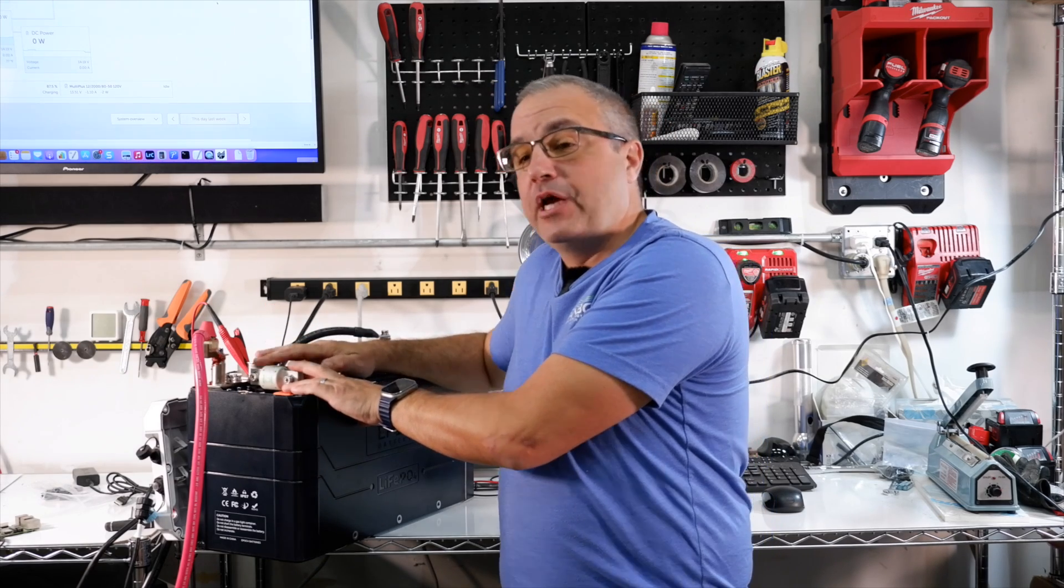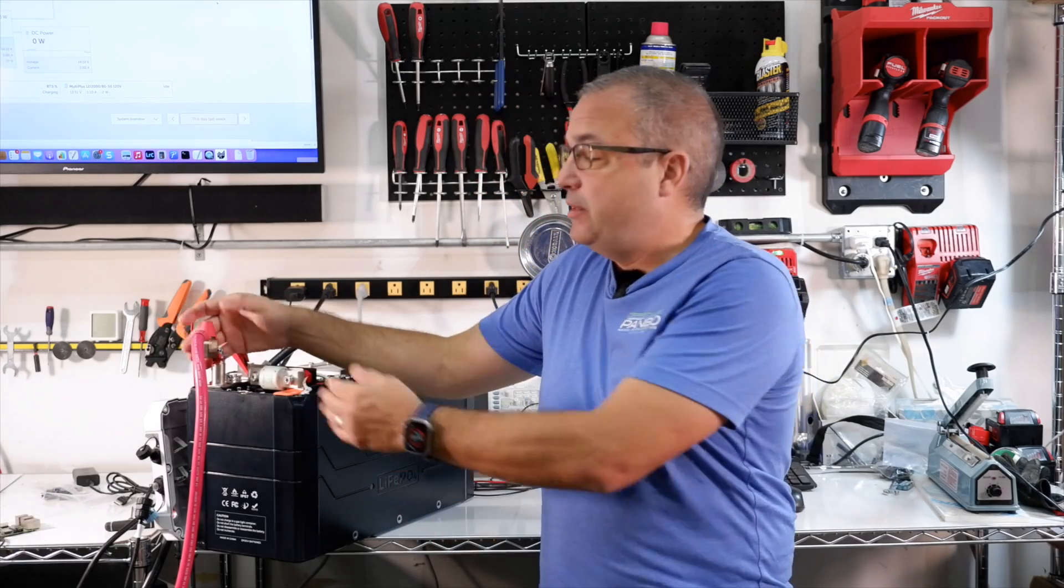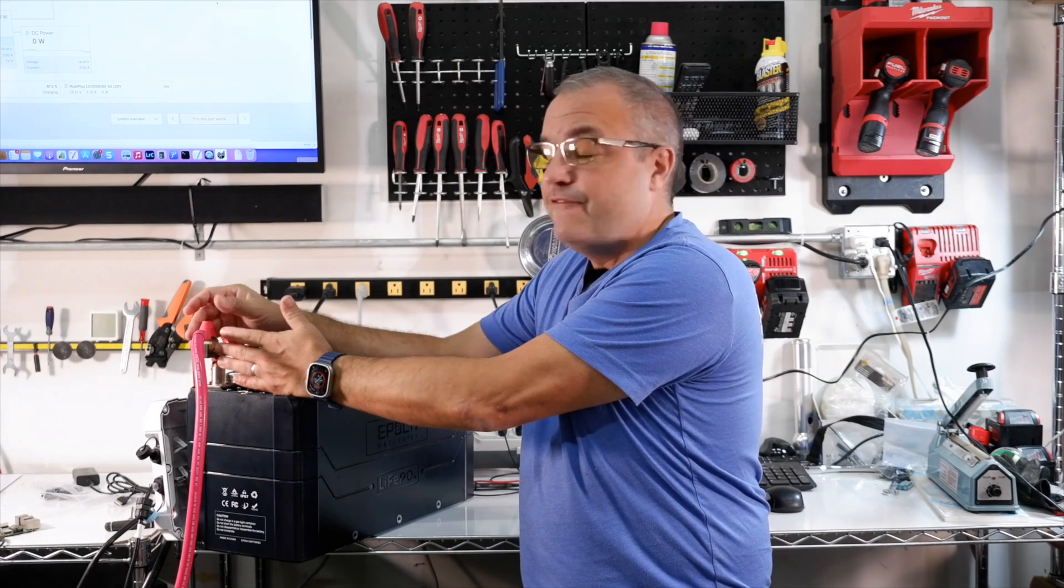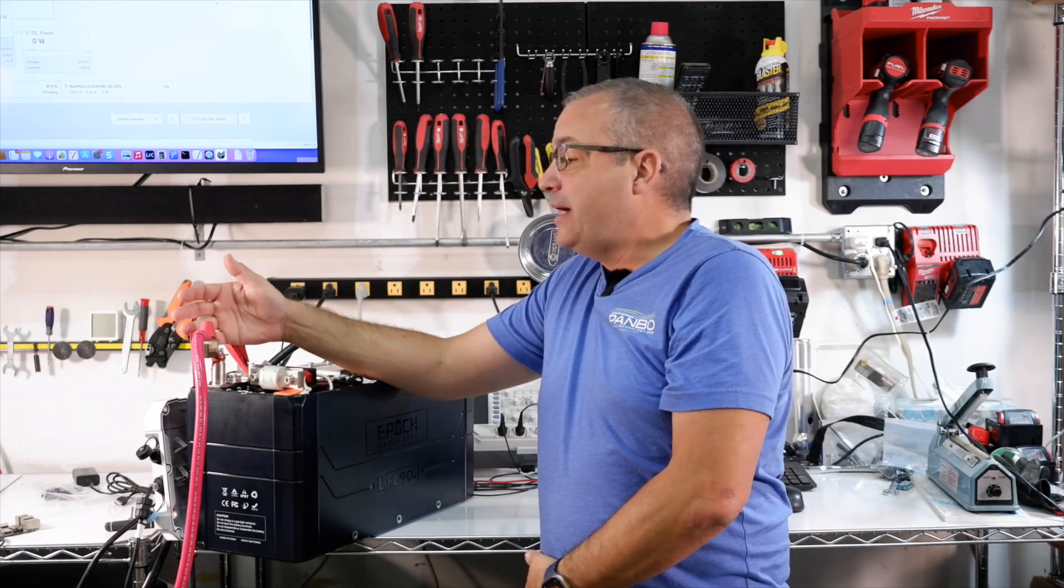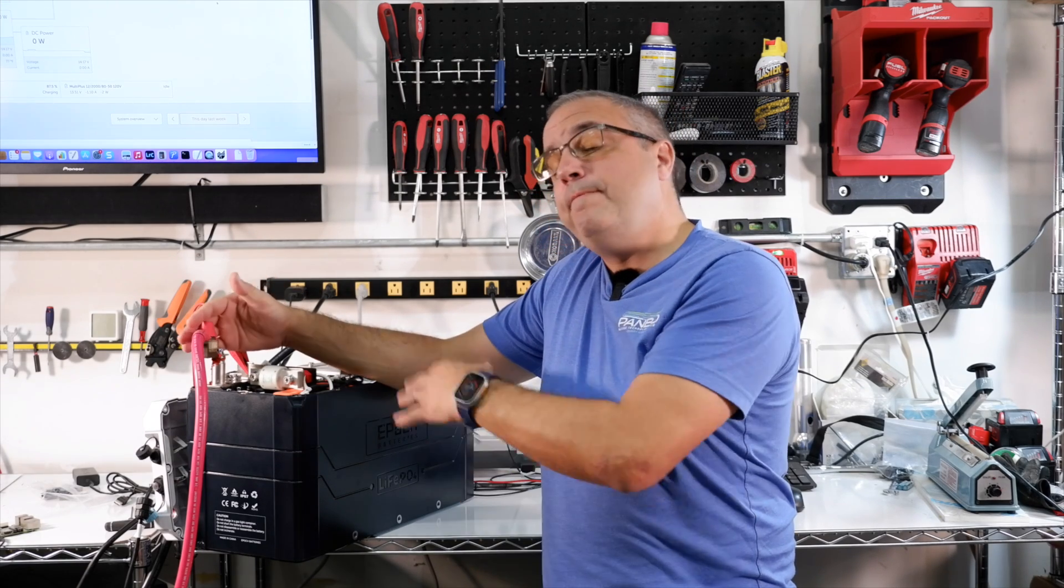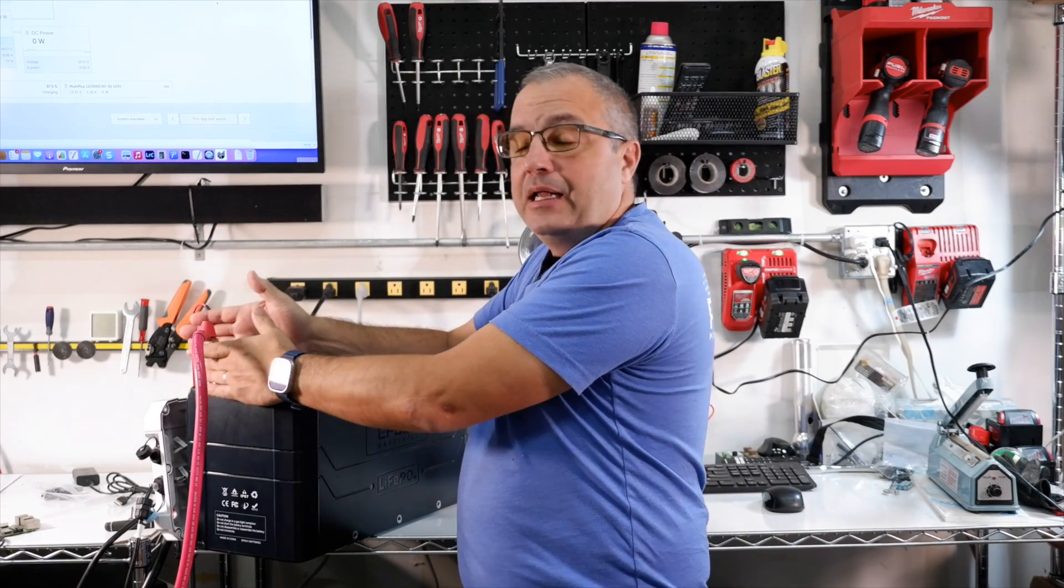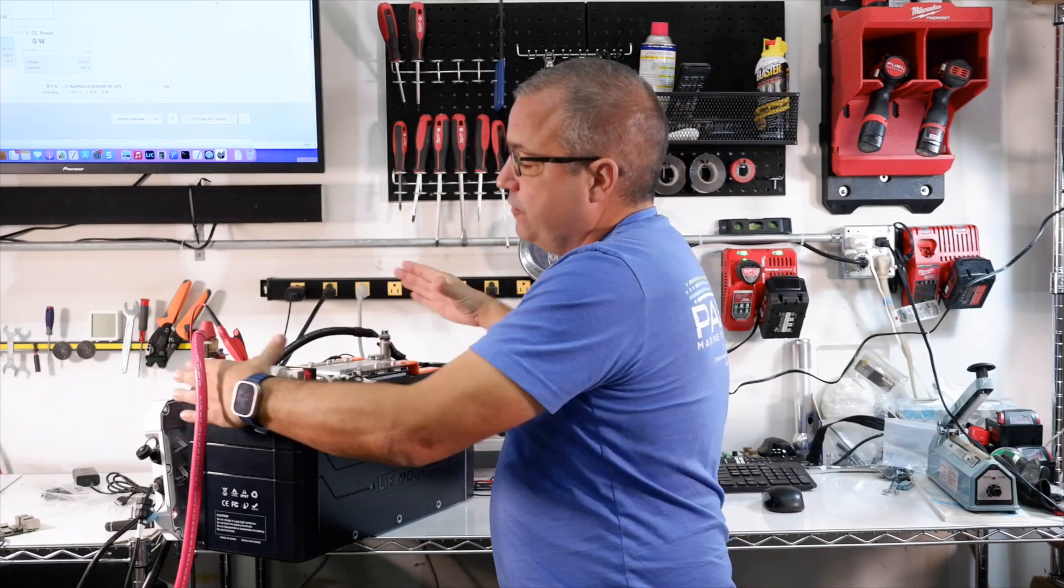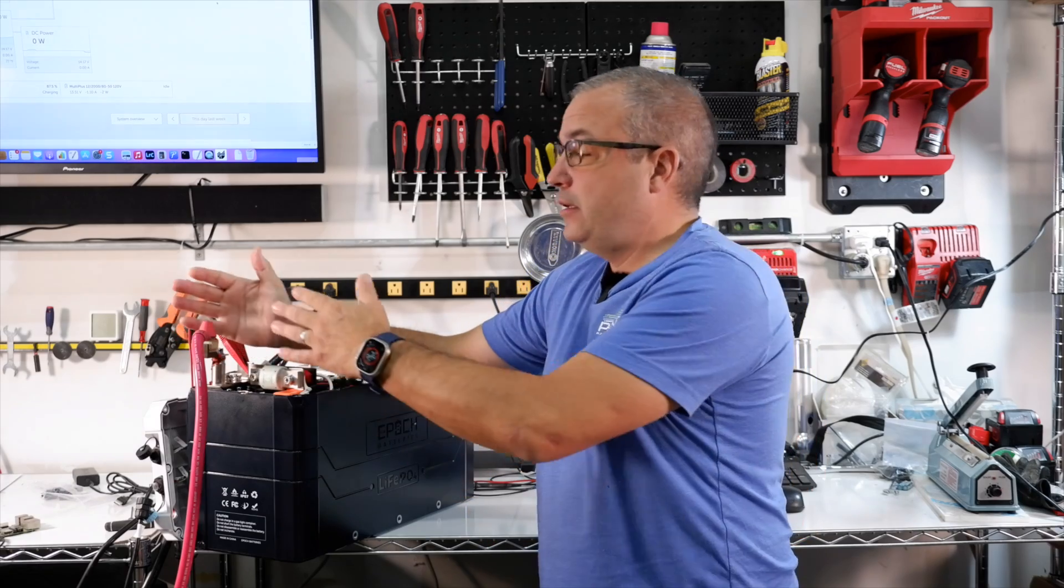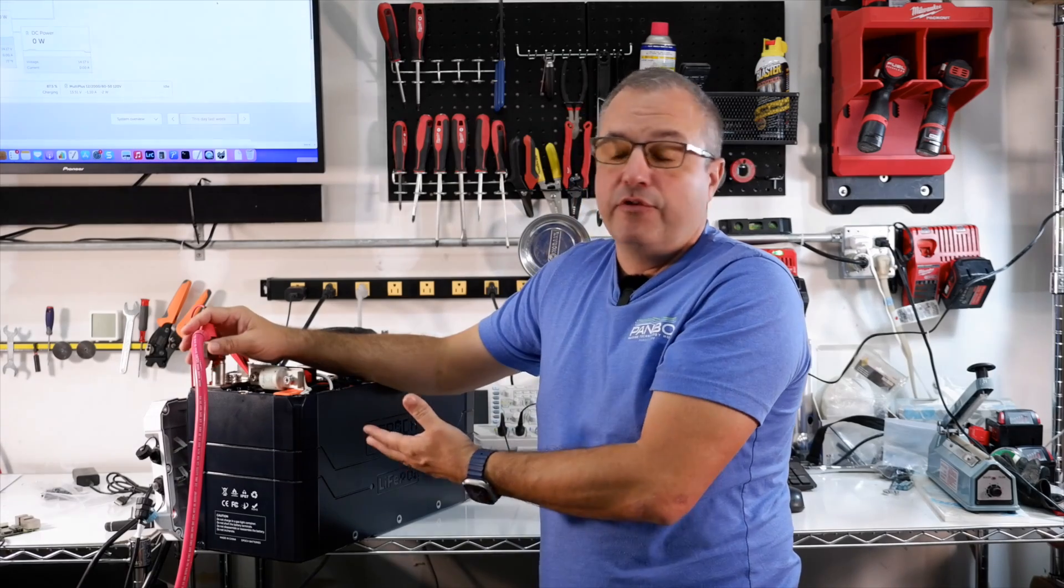So our next over current protection doesn't need to meet that 20,000 amp AIC. And so you can use something like what I'm using here. This is a 300 amp MRBF rated with a 10,000 amp AIC. Wouldn't be enough to be the primary fuse, but it's a great secondary fuse safely mounted on top of the battery. Ordinarily the battery would be closed with the case on top and the MRBF right here. And now you've got all of your fusing easily accessible, safely mounted, and meeting all of the various requirements.